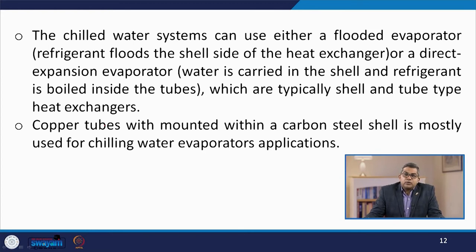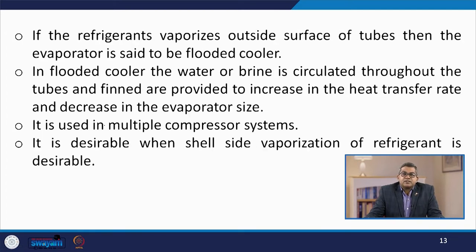Copper tubes are usually mounted within a carbon steel shell, mostly used for chilling water and evaporating applications. If the refrigerant vaporizes outside the surface of the tube, the evaporator is called a flooded type cooler. In a flooded cooler, water or brine is circulated throughout the tubes and fins are provided to increase the heat transfer rate and decrease the evaporator size; it is used in multiple compressor type systems. If they vaporize inside the tube, it is called a dry cooler, where refrigerant flows through the tubes and water or brine is circulated through the shell side.